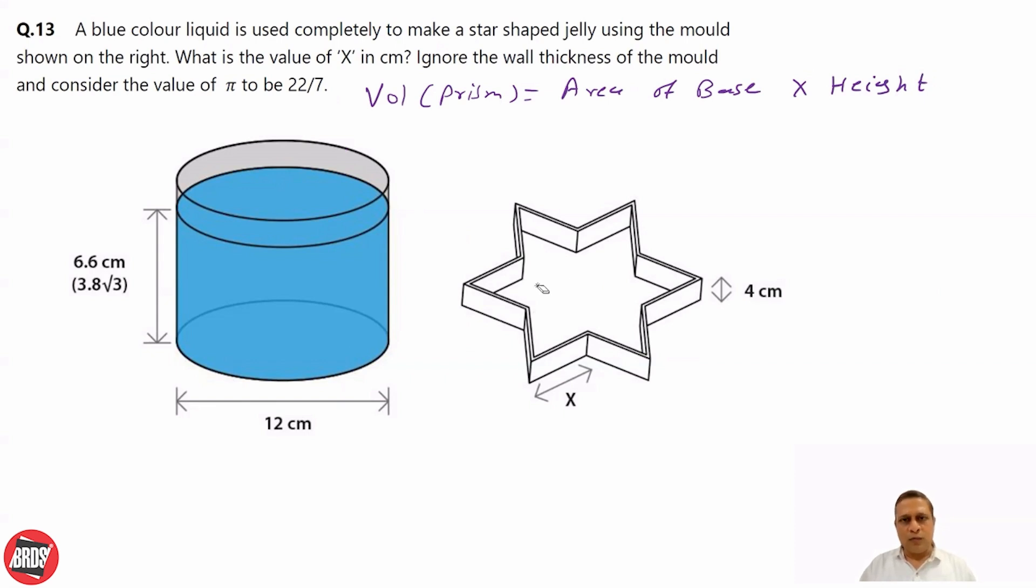So volume of this blue liquid and volume of star is same. So let's compare them. So volume of liquid is easy. It's just a cylinder. And we know volume of cylinder is pi r square h.